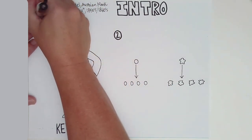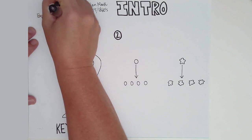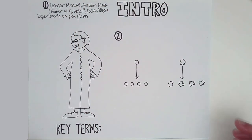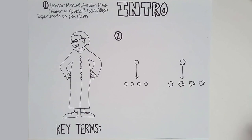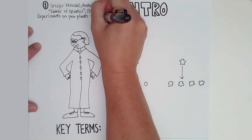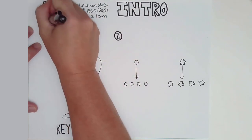He chose to do his experiments on pea plants because they are easy to grow and it doesn't take very long to look at multiple generations. He could either have them self-fertilize, because they have male and female parts, making purebred or homozygous plants. Or he could cross-fertilize from one plant to another to see how different forms of traits interacted. That's how he eventually figured out dominant and recessive.